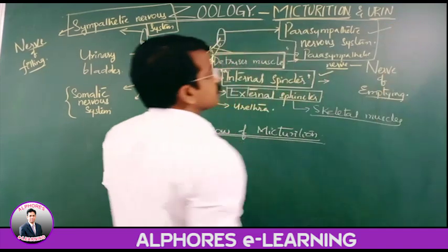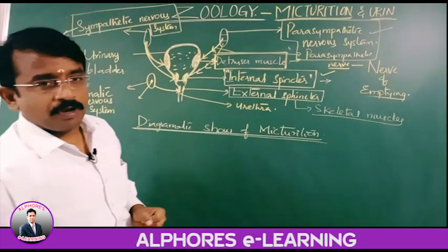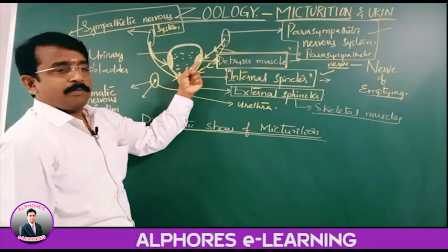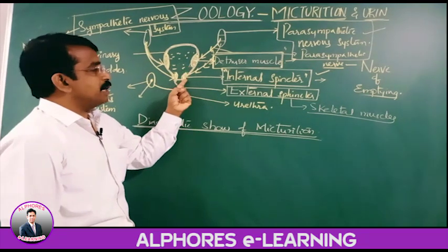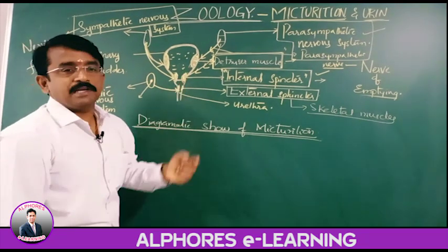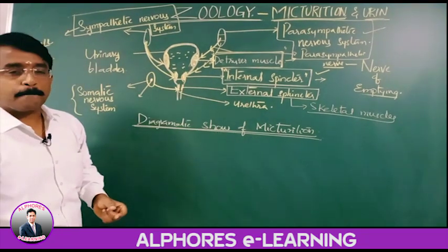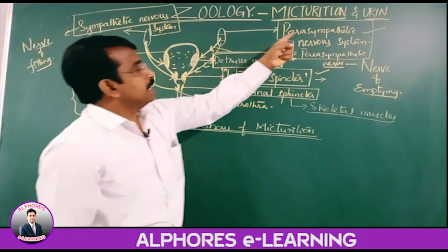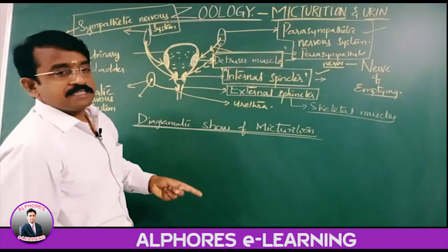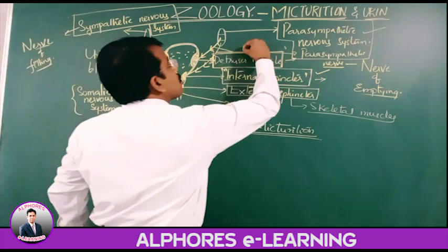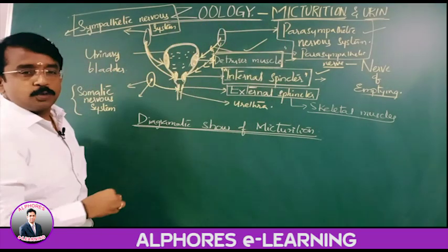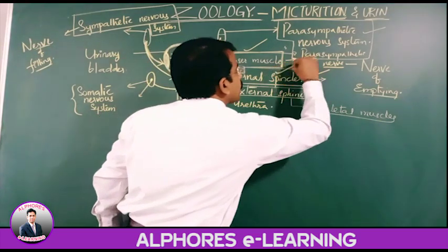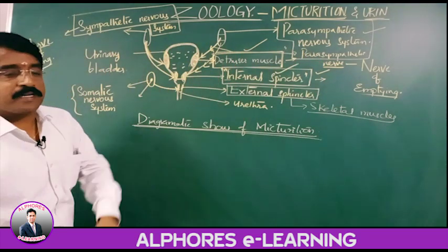Next, the parasympathetic nervous system — parasympathetic nerves innervate into the detrusor muscles as well as the internal sphincter. The parasympathetic nerves give the signal for contraction of the detrusor muscles as well as relaxation of the internal sphincter.